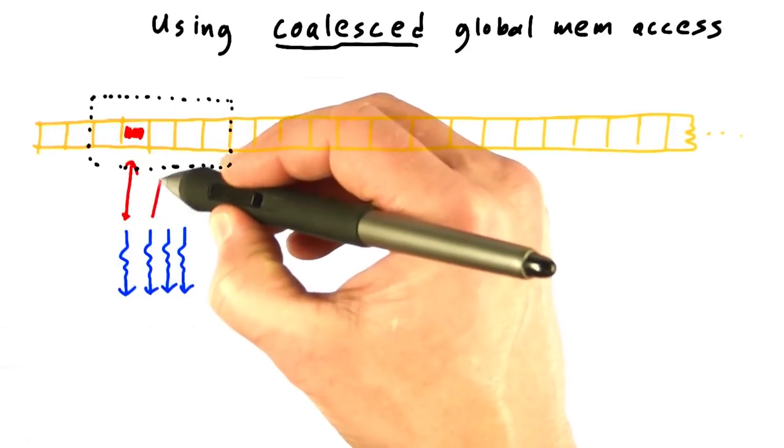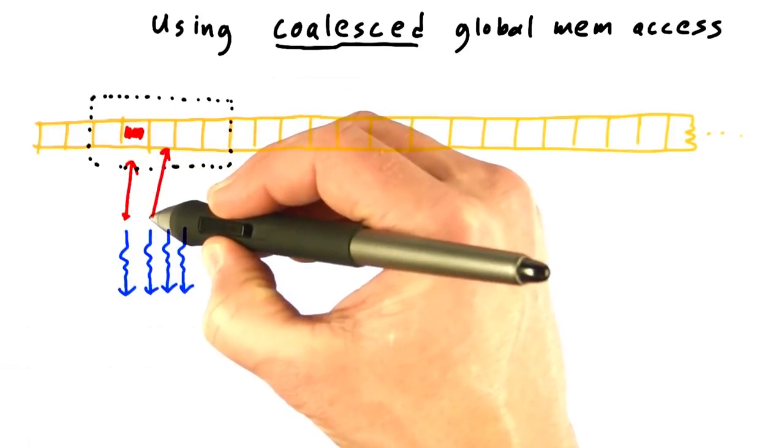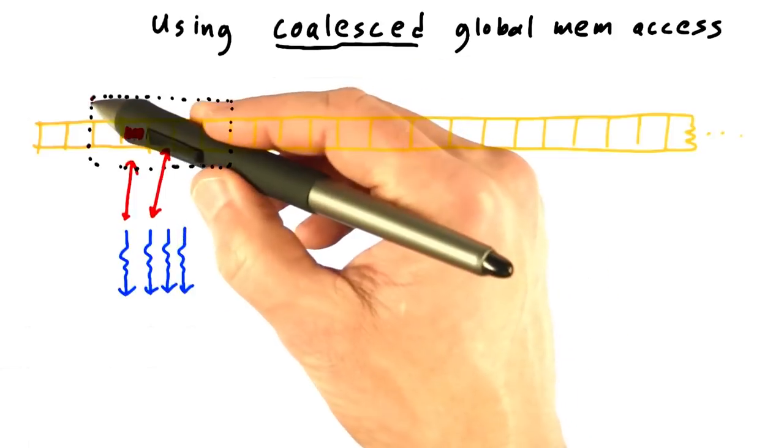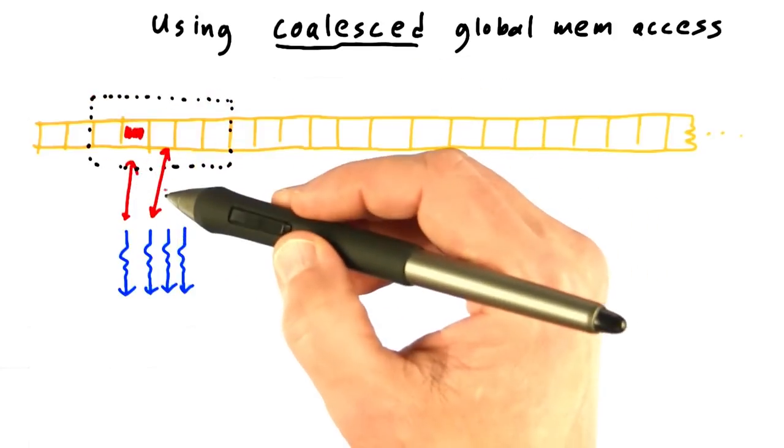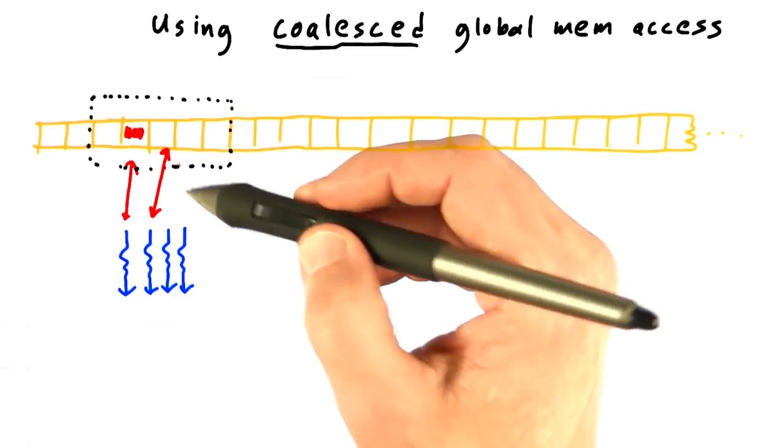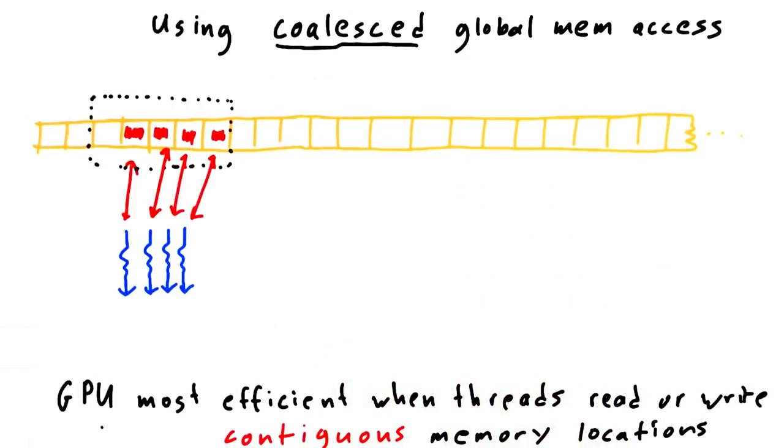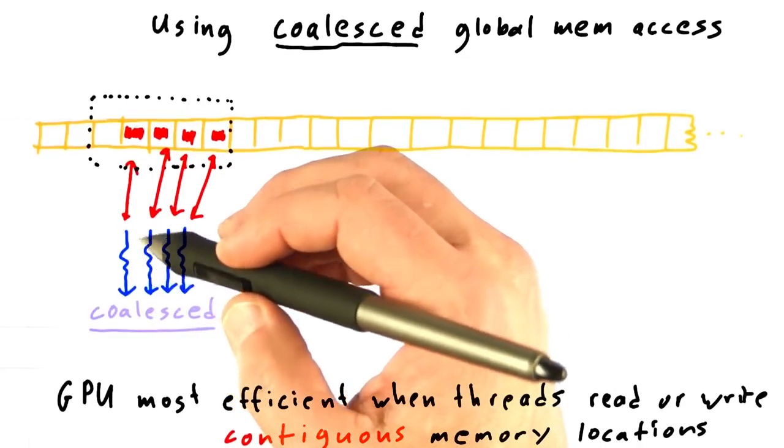But if other threads are making similar accesses at the same time, then the GPU can exploit that and reuse this larger chunk for all of the threads that are trying to access that memory. This means the GPU is at its most efficient when threads read or write contiguous global memory locations. We say such an access pattern is coalesced.